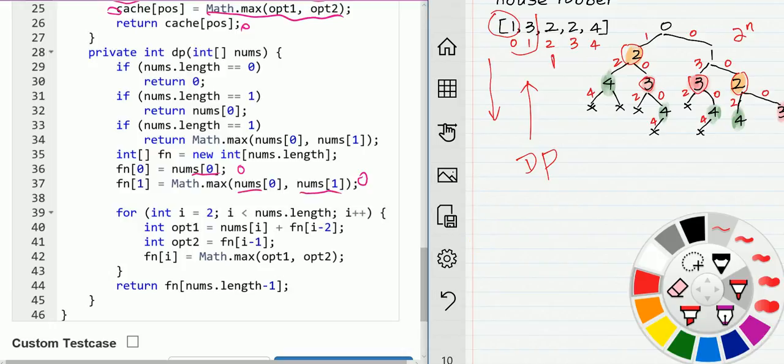Then we start from index 2. Each step we have two options. Option 1: we rob that house. The money we can get is the value of that element plus two steps backward, that's the maximum money we can get from option 1. Option 2: we do not rob that house, which means we can rob the one step backward. So then f of i equals maximum of those two options.